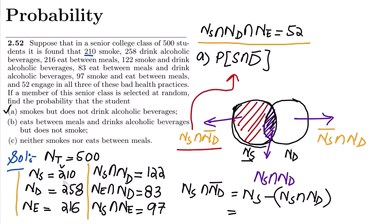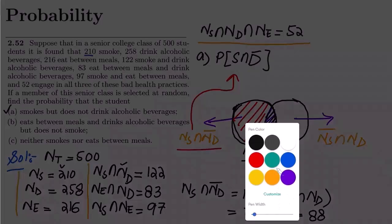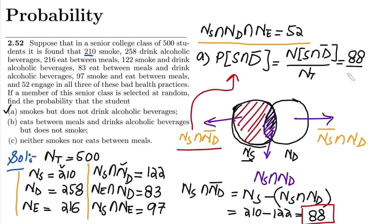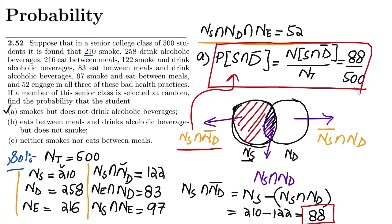So the calculation is: n_s minus n_s ∩ n_d, which is 210 minus 122 = 88. That is the number of people who smoke but don't drink. To find the probability, I divide by the total number of students: 88 divided by 500. This is the answer to part (a).